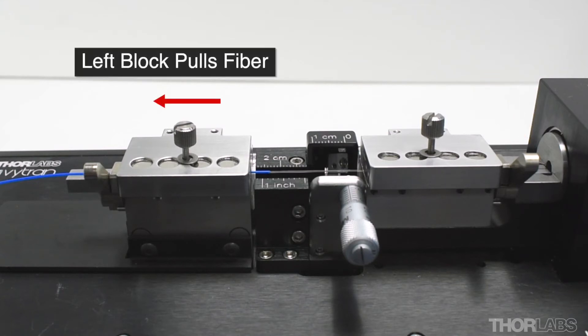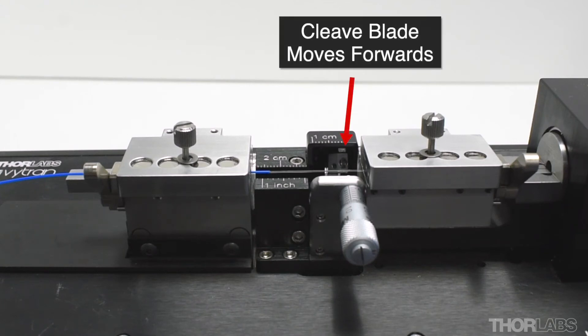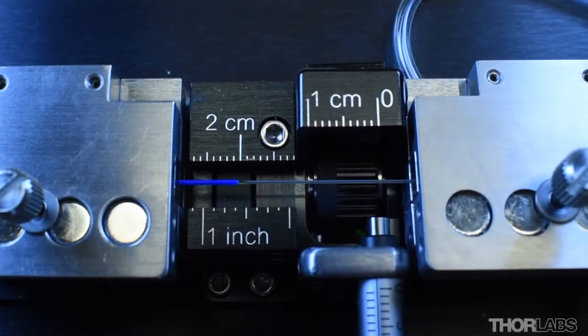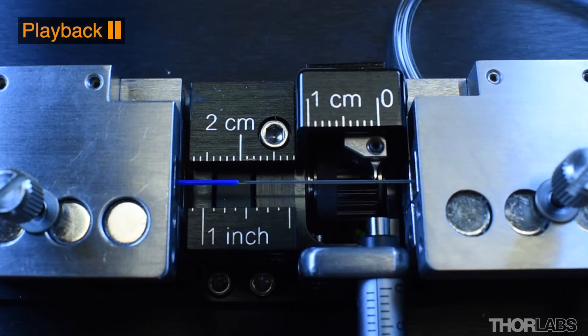Then, the left fiber holding block will move slowly left, applying tensile stress along the axis of the fiber. Once the required axial cleave tension is reached, the cleave blade will advance to its pre-cleave position. It should not strike the fiber during this move, then the blade will oscillate and advance forward.